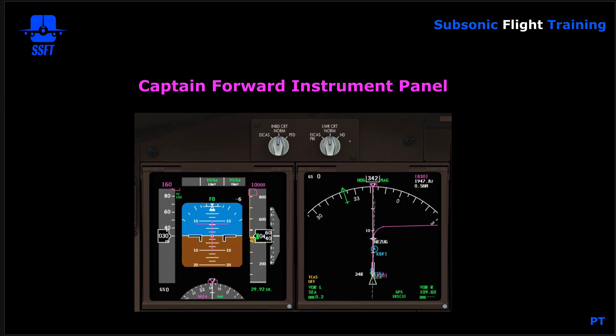The captain's forward instrument panel again consists of the PFD and the ND — that's the EFIS flight control system for the captain. Above those display units you'll see there are two switches. They provide for automatic switching and also for manual switching in the case of failure of the automatic system.